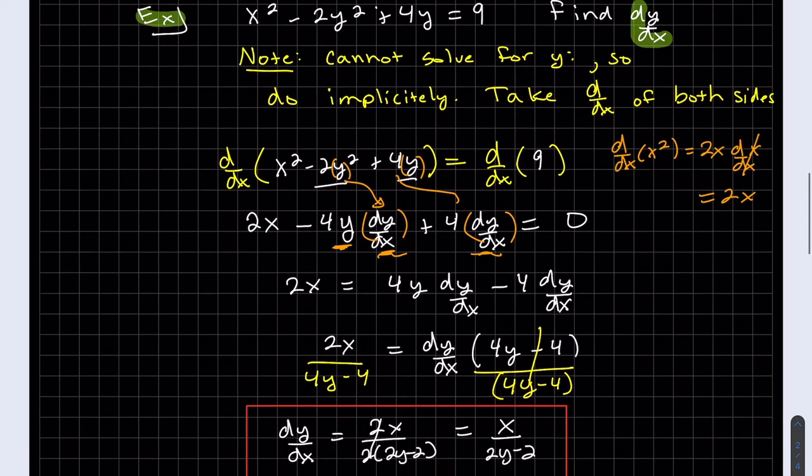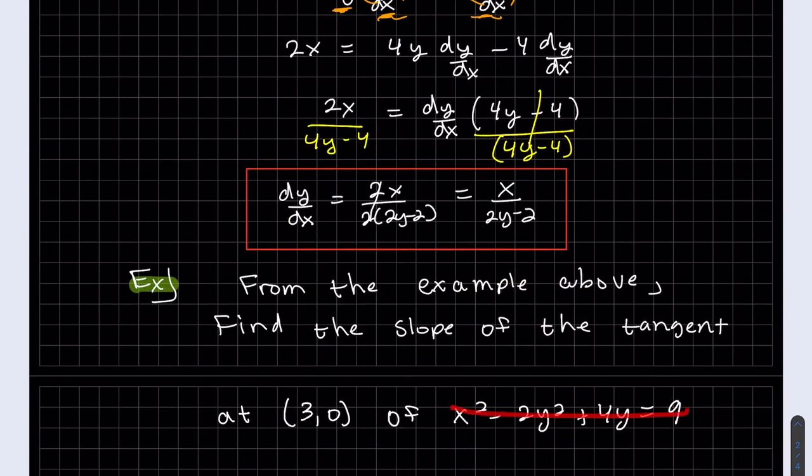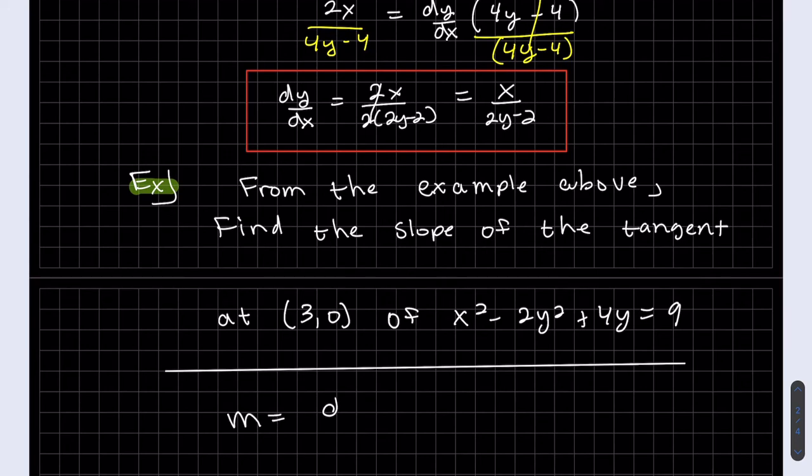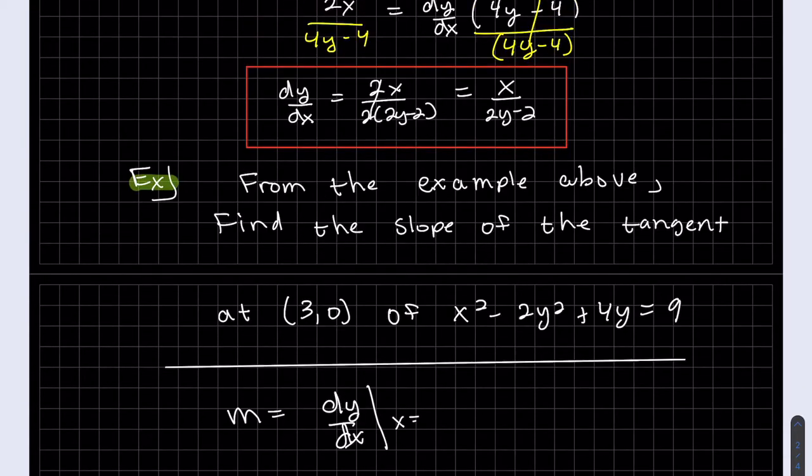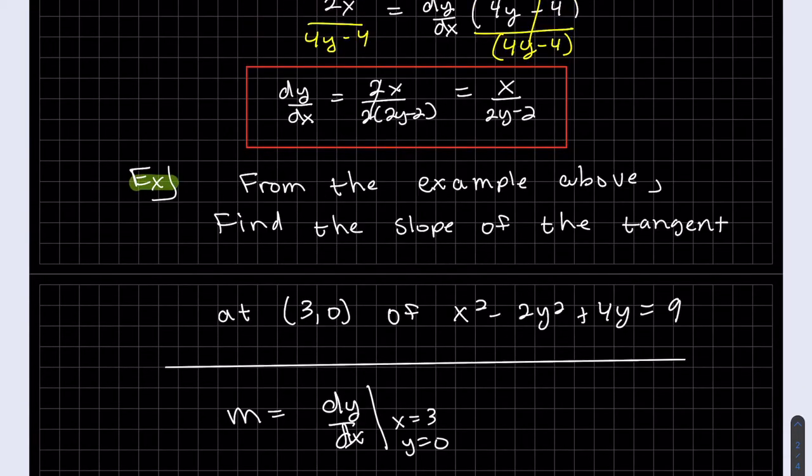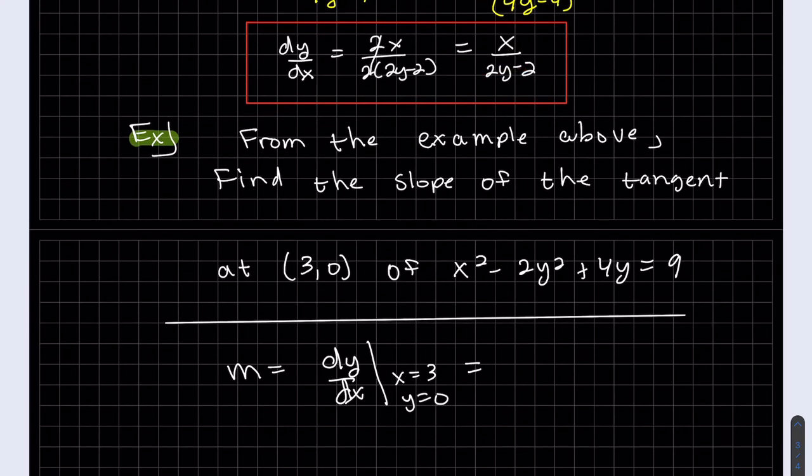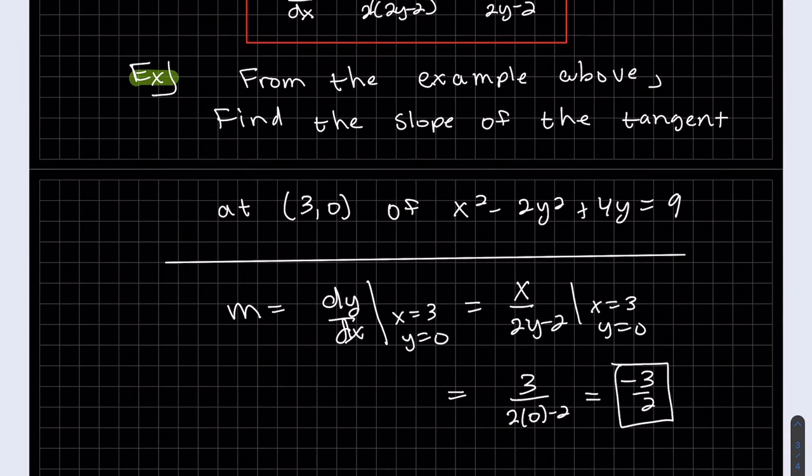So since this is the same problem, we want to find the slope of the tangent line at (3, 0). The slope is the derivative evaluated at that point, which is right here. Since it's implicit, we need both variables: x equals 3 and y equals 0. So my slope of the tangent line at that point is minus three halves.